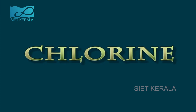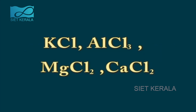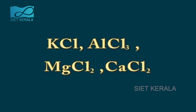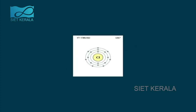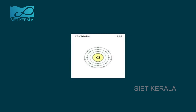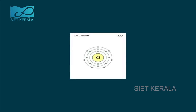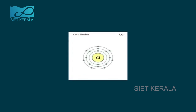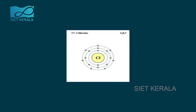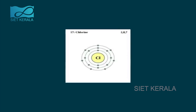Chlorine occurs in nature in the form of compounds only. Main chlorine compounds are KCl, AlCl3, MgCl2 and CaCl2. The reason is the valency of chlorine, which is 1. The capacity to gain electrons is very high for chlorine, and because of these peculiarities, the chlorine atom has high chemical reactivity.